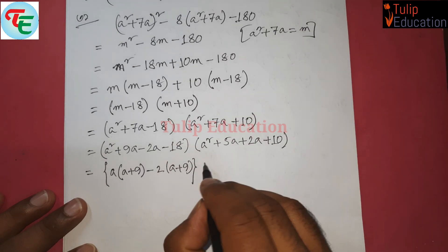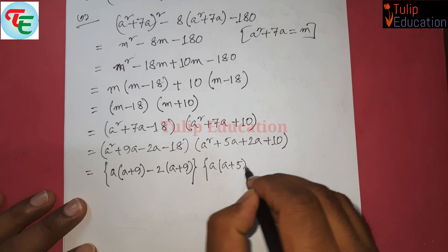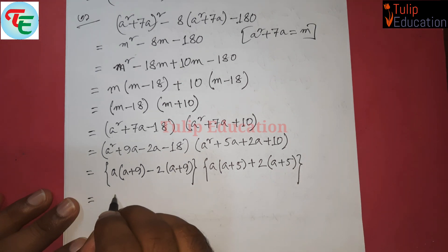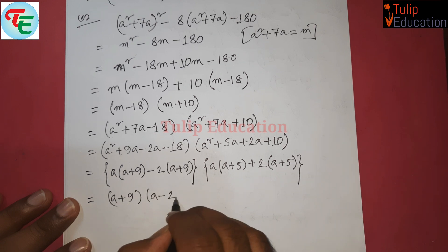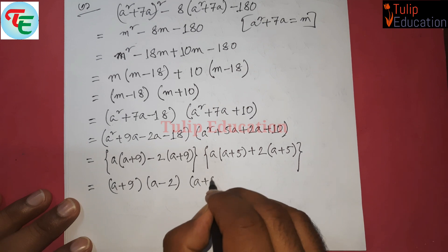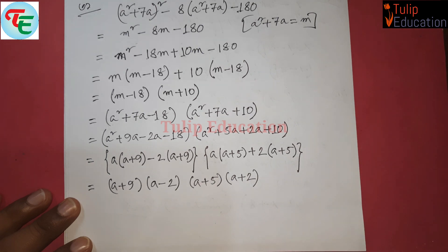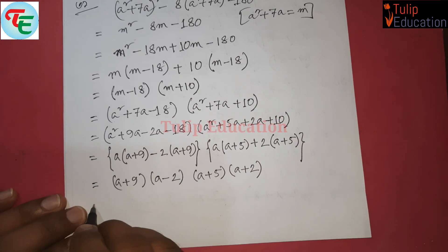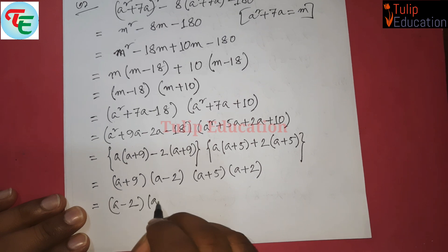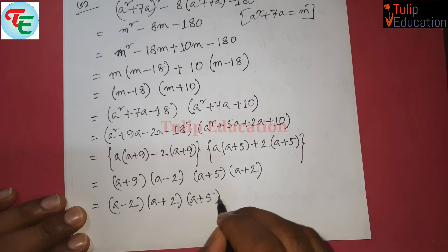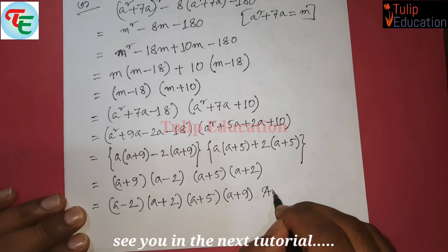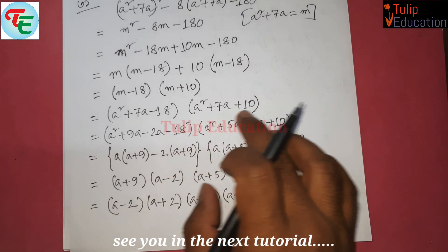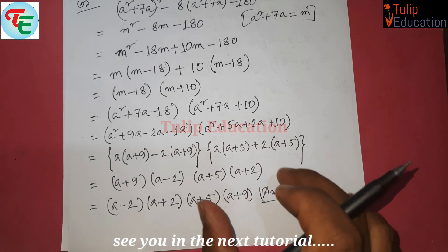Second bracket closes. We take common: a plus 5, and a plus 2 common gives a plus 5 times a plus 9, and a minus 2 times a plus 2 times a plus 5 times a plus 9. We will finally get the answer. So you can see the matter will be fine and the analysis is complete.